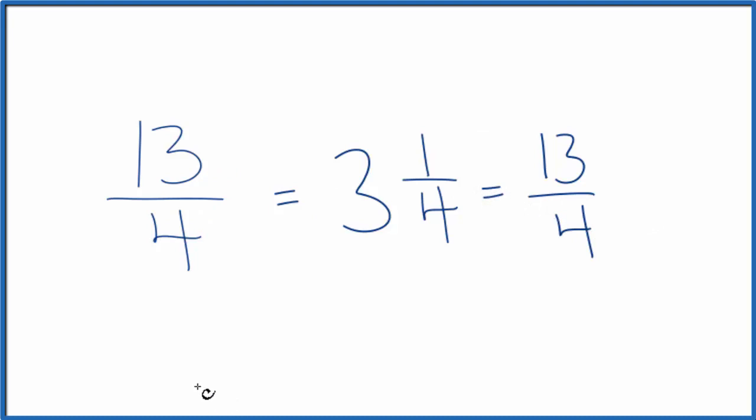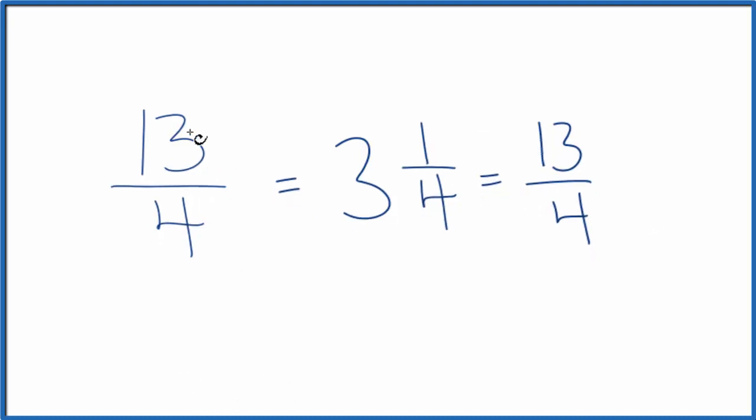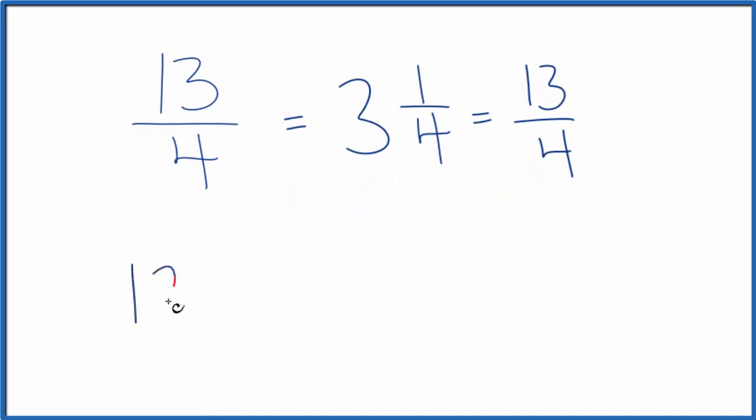Here we go. The way to think about this is that 13 fourths, we could write that as 13 times 1 fourth. It's the same thing. 13 times 1 is 13 over 4, 13 fourths. But we could also write it like this. 13 times 1 fourth.